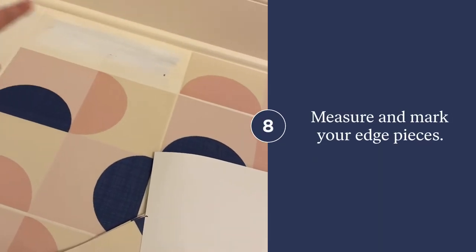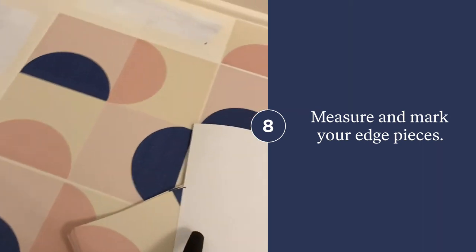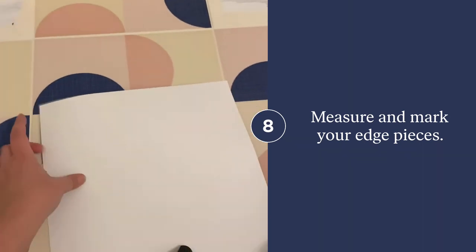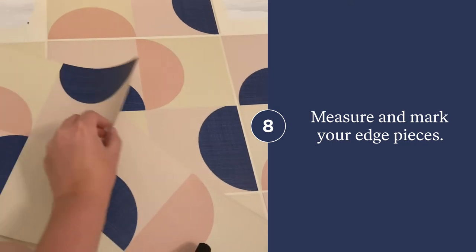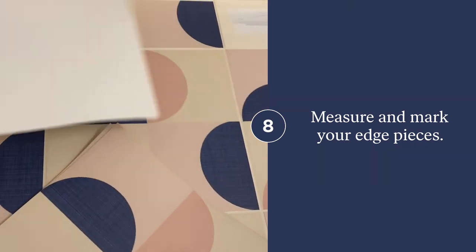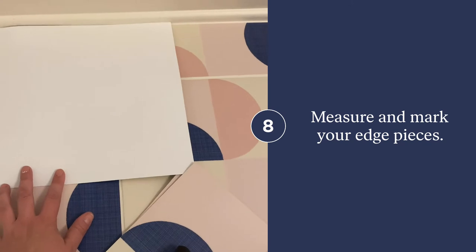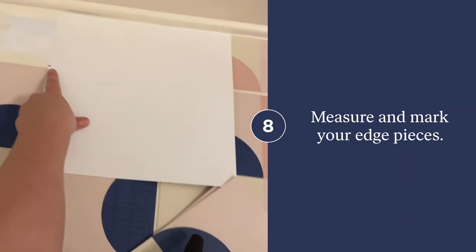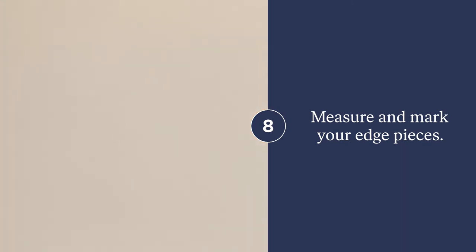So I've gotten to the edges that I now need to trim. I'll show you what I am doing. I'm figuring out which way the tile needs to paste and I'm flipping it over and marking on it. Hopefully you can see that. Where I need to cut it.